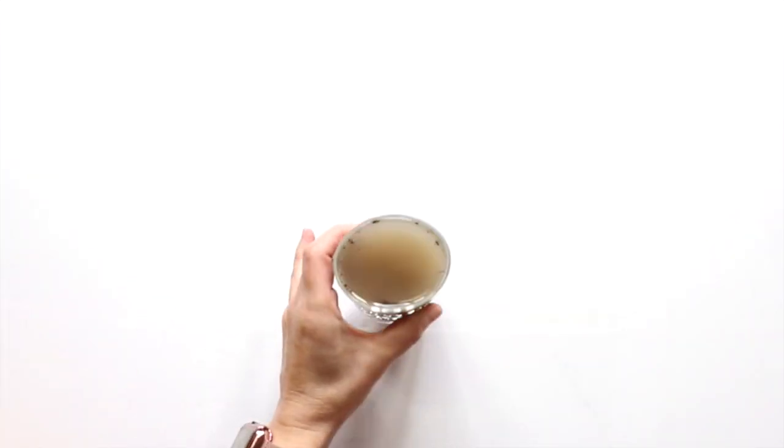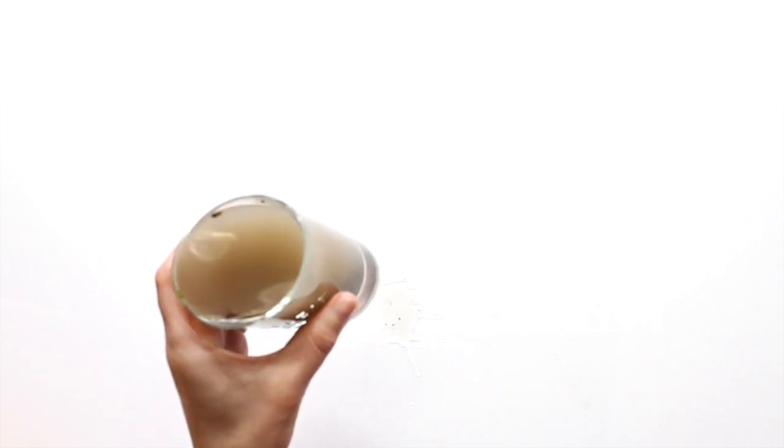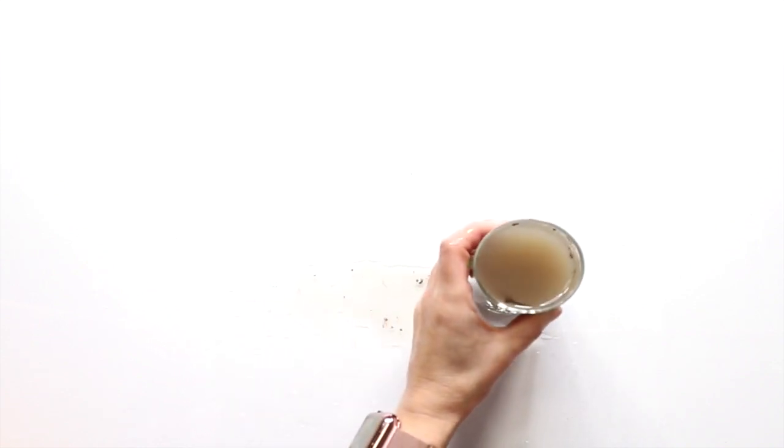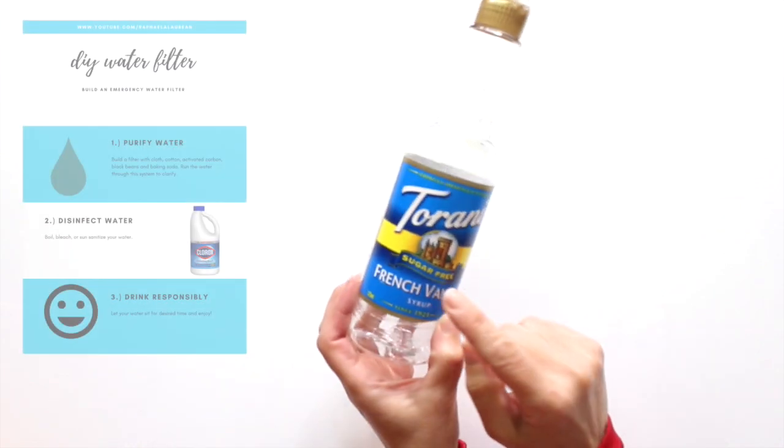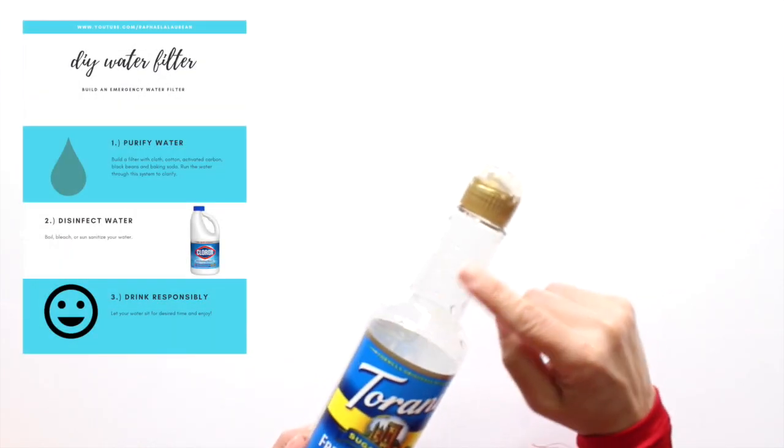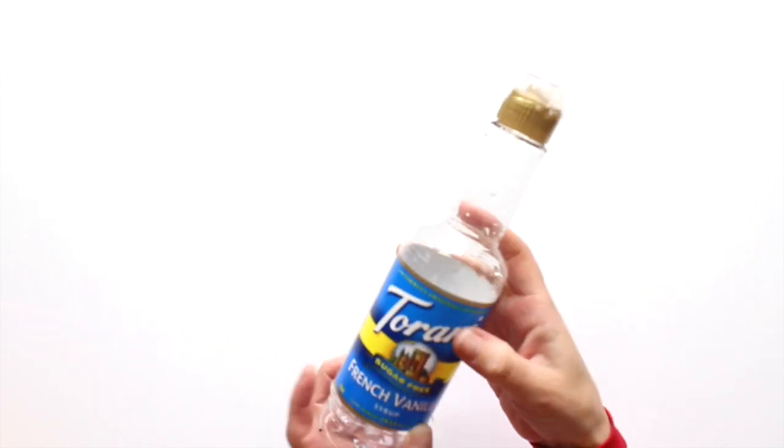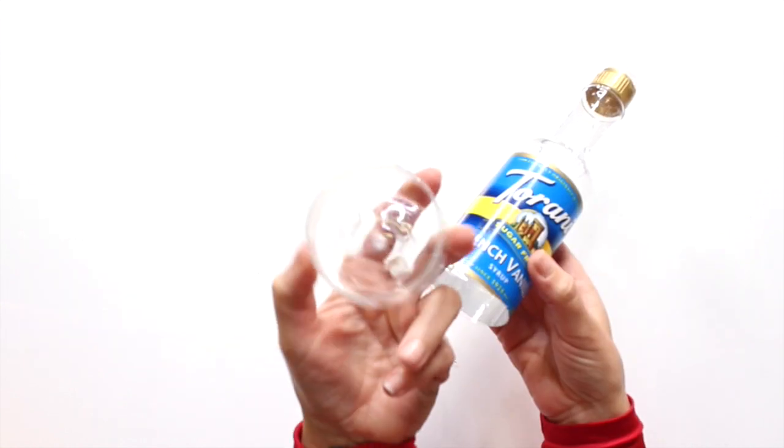So if you watched my DIY mask video, which I will link right here, then you know that I used this activated carbon in here. And I got to thinking because I've received so many requests about how to do a DIY water filter. So I racked my brain and this is what I came up with. Now I created a little sheet for you so you guys can just watch this tutorial. It's on my website and it's linked down below.